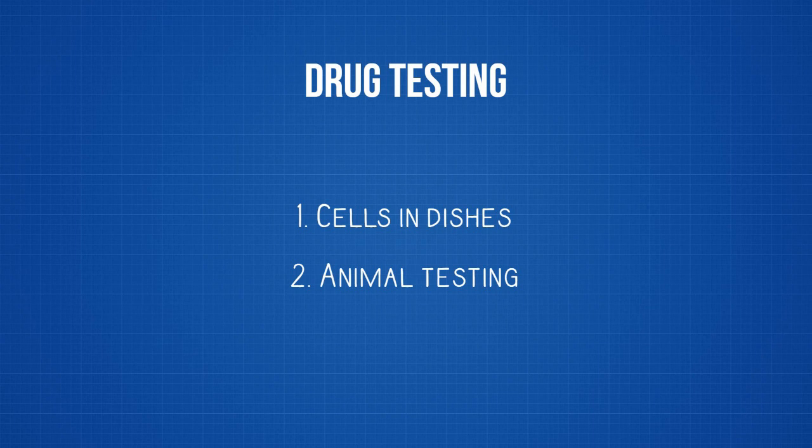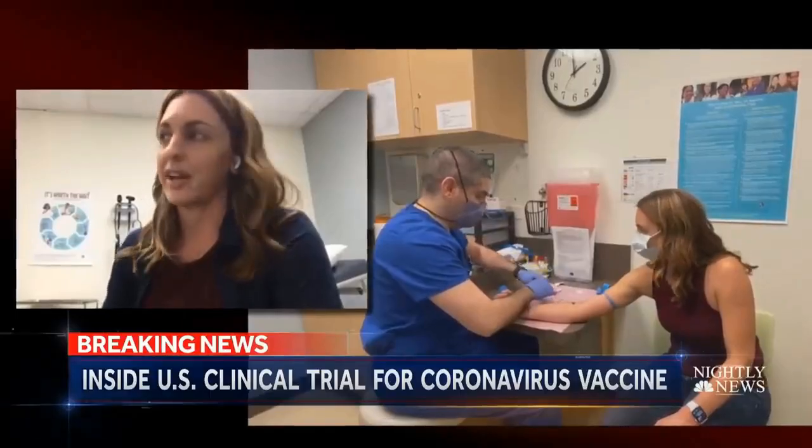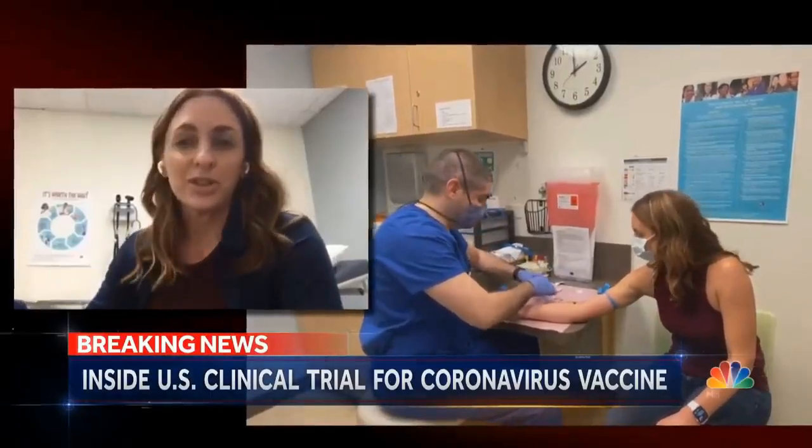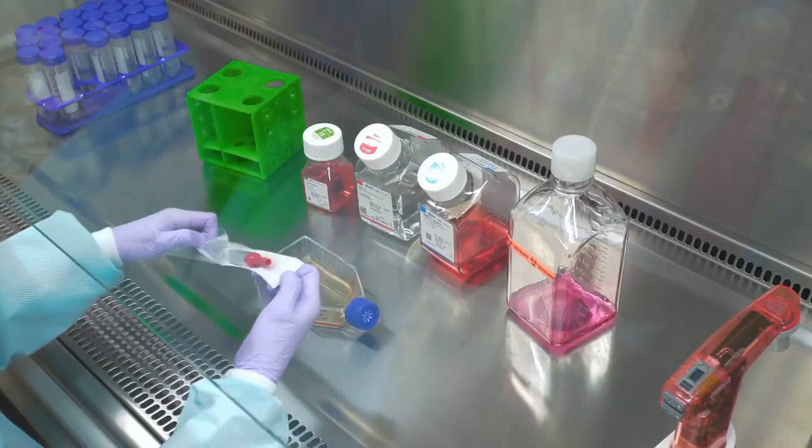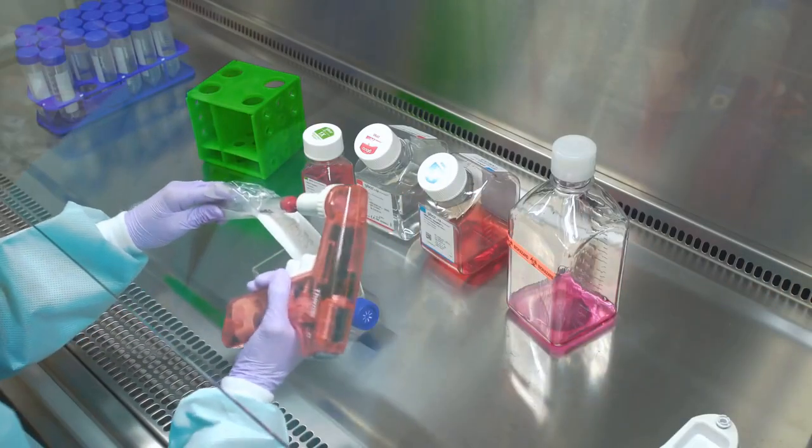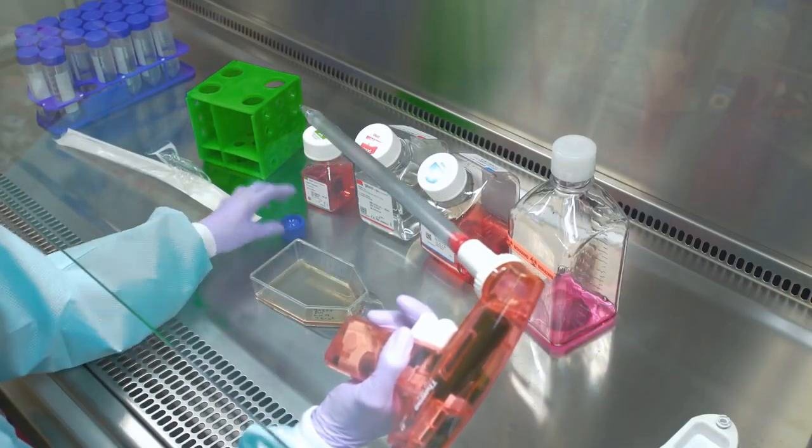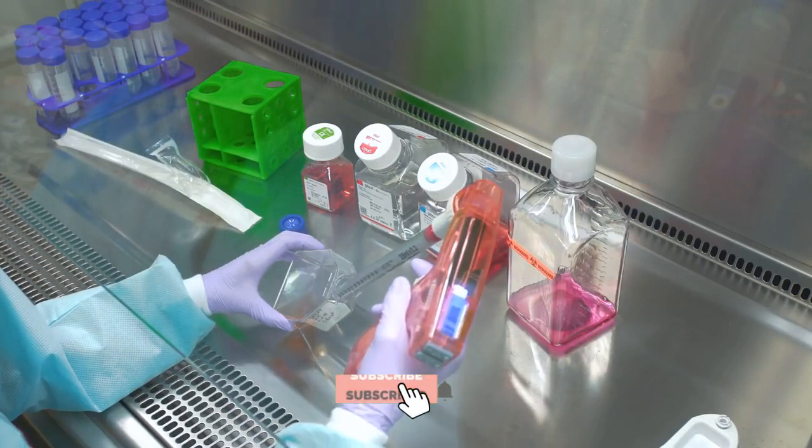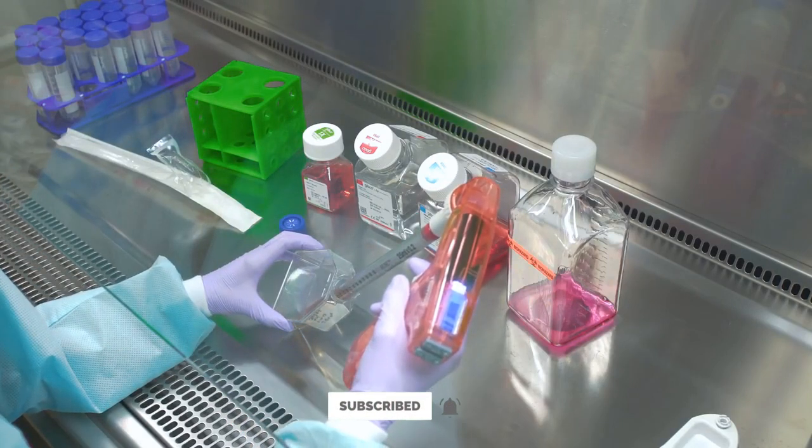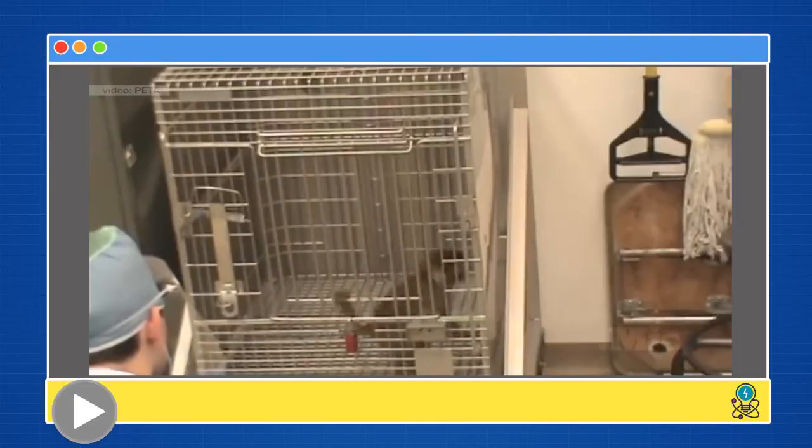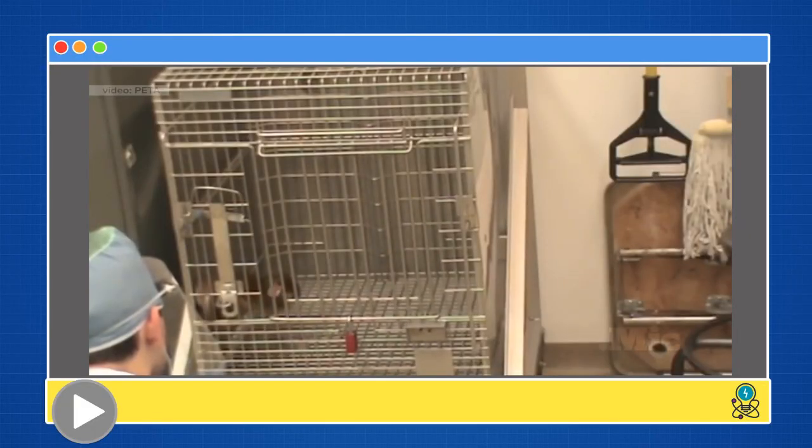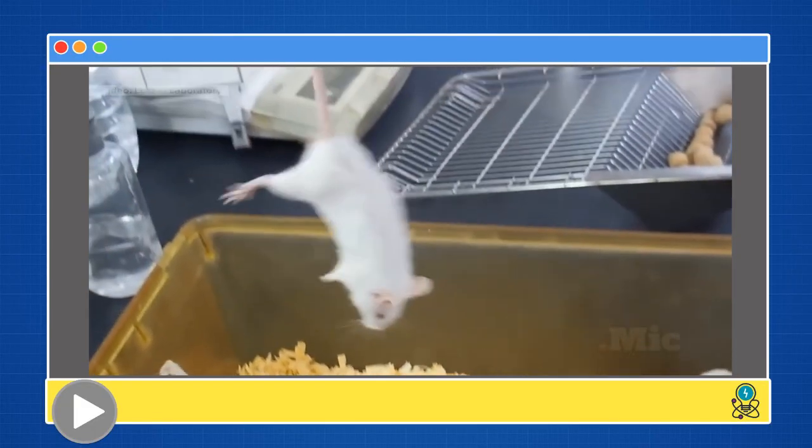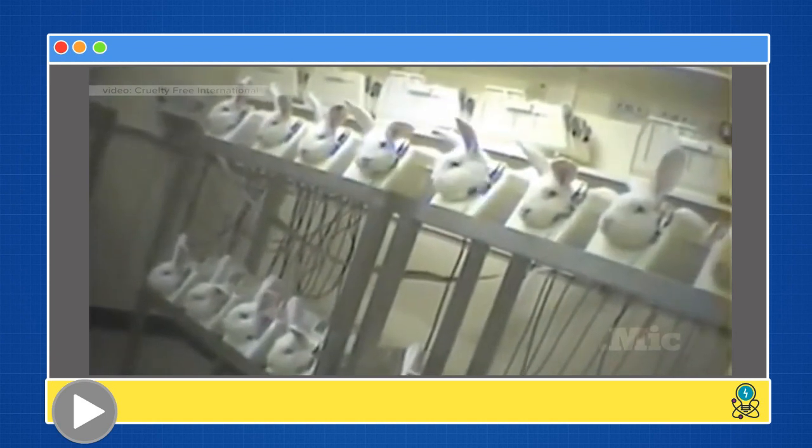When a drug is developed, there are two methods to test it: cells in dishes and animal testing. Further, the drug is put up for clinical human trials. In conventional cell culture, cells are grown at the bottom of a dish. So they are flat and spread out in two dimensions. But if we think about our body, we are not flat and two-dimensional. Again, there is animal testing. Many of these animal testing don't even predict if the drug will work on humans.